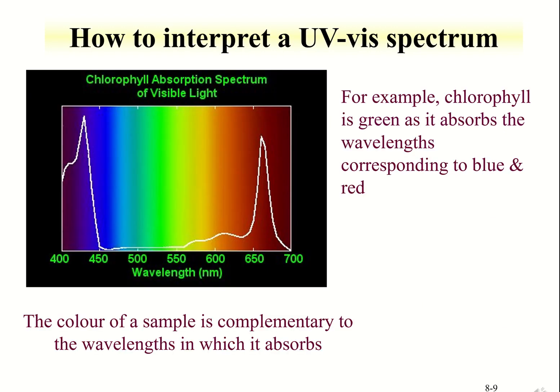This is another example of UV-visible spectrum that shows the absorption of certain wavelengths of visible light by chlorophyll. Note that the color absorbed is blue at 420 nanometers and red at 660 nanometers. This causes chlorophyll to appear green, which is the light transmitted. This means that the color of a sample is complementary to the wavelengths which it absorbs.